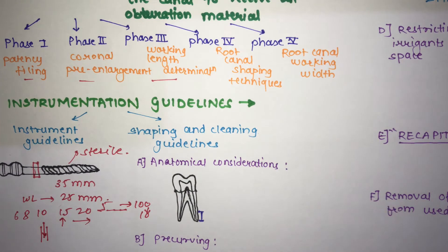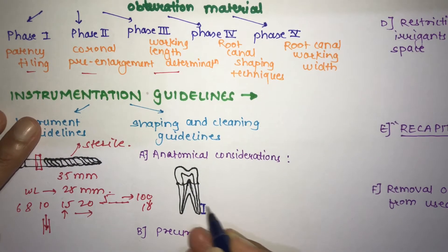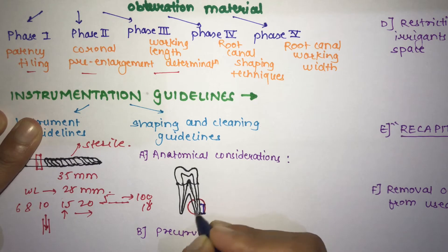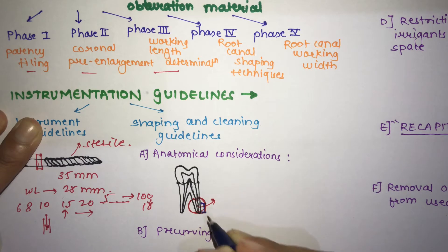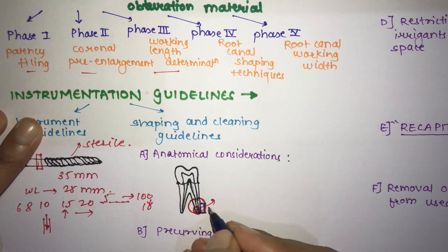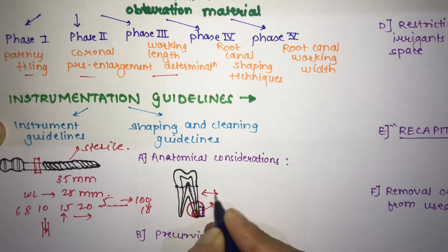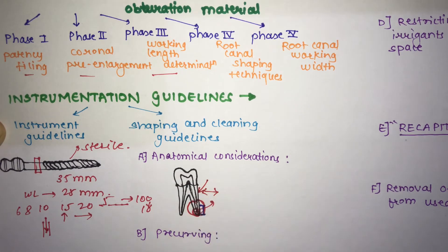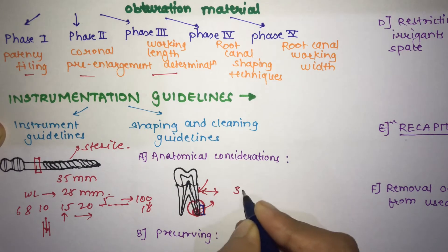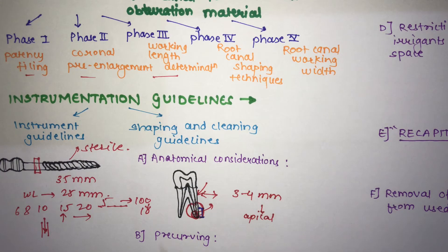The shaping and cleaning guidelines have six points. The first is anatomical consideration: the most critical area for canal disinfection is the apical 3–4mm. As seen in the zones of fish, the first zone — the zone of infection — has more bacteria in the apical 3–4mm. The canal must be widened enough so that all irrigants flow properly into this critical region.